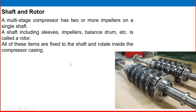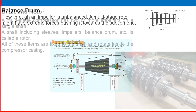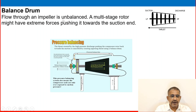The shaft and rotor: a multi-stage compressor has two or more impellers on a single shaft. The shaft including sleeves, impellers, and balance drum is collectively called the rotor. All of these items are fixed to the shaft and rotate inside the compressor casing. If you have a chance to visit a mechanical workshop when the compressor is open for maintenance, you can see all these items.